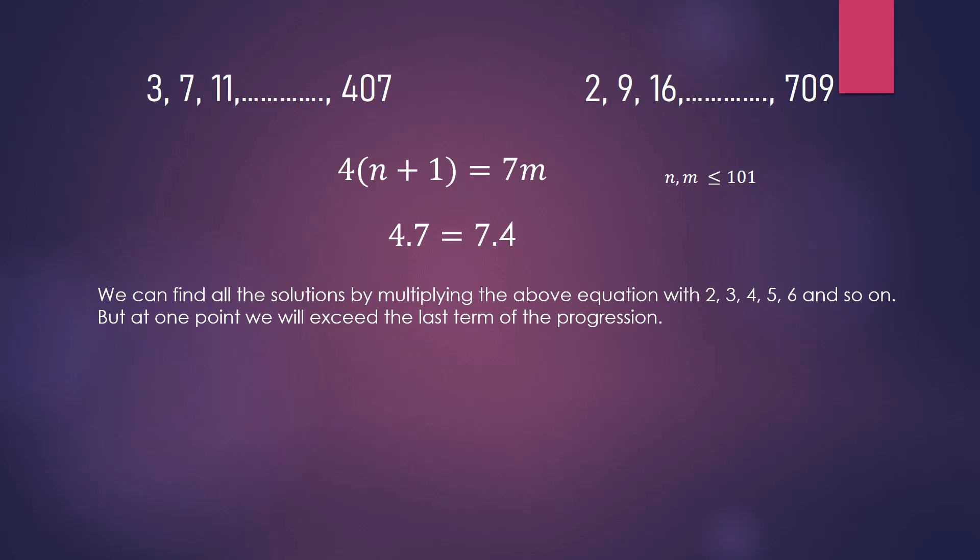To see where we need to stop, see that if we multiply by 15 on both the sides, and by comparing we get N to be 104, which crosses the last term, since we have in total 102 terms. But when we multiply with 14, and by comparing we get N as 97 and M as 56. That is, the 97th term of the first progression is equal with the 56th term of the second progression.